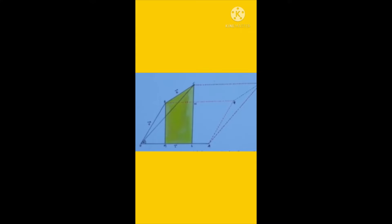It is also called the distributive law of vectors. You can see in the picture: OBQA is a parallelogram and another one is OCPA. We have OC vector equal to OB vector plus b vector, which is equal to a vector plus b vector. And let angle COA be alpha.